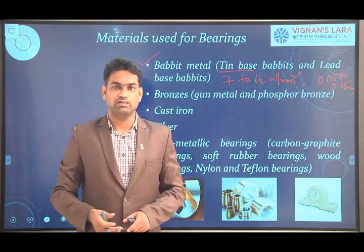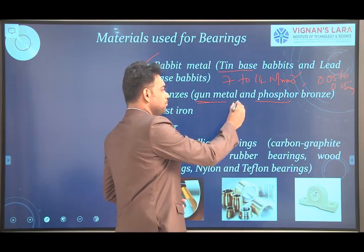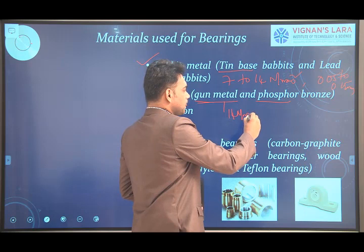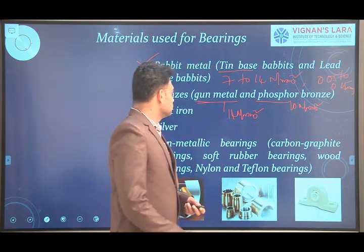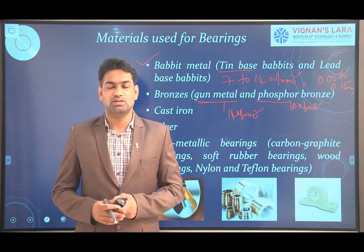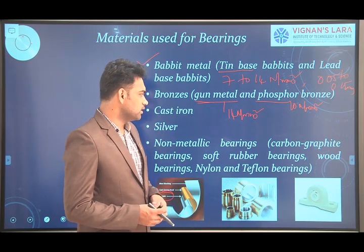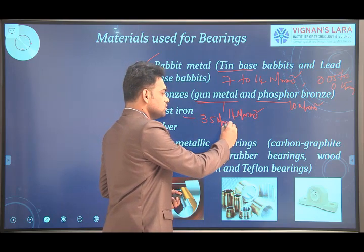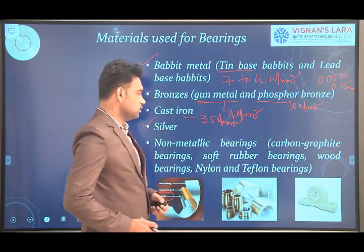Bronze, which is a copper alloy, includes gunmetal and phosphor bronze. Gunmetal is used for pressures more than 14 N/mm², and phosphor bronze up to 10 N/mm². Cast iron is a cheaper bearing material used where lubrication is adequate and for less expensive applications, operating at low pressures up to 3.5 N/mm². Silver is also a bearing material but is a costlier, expensive material.